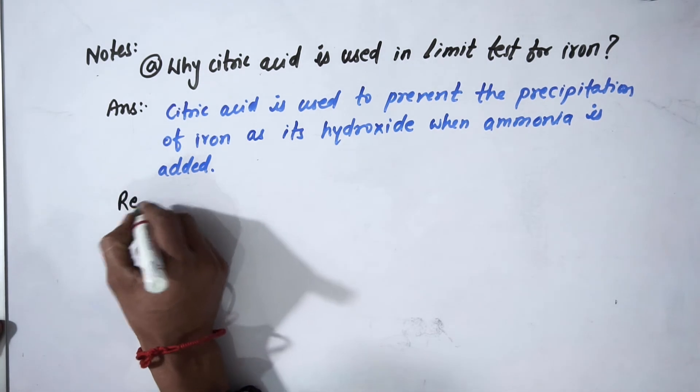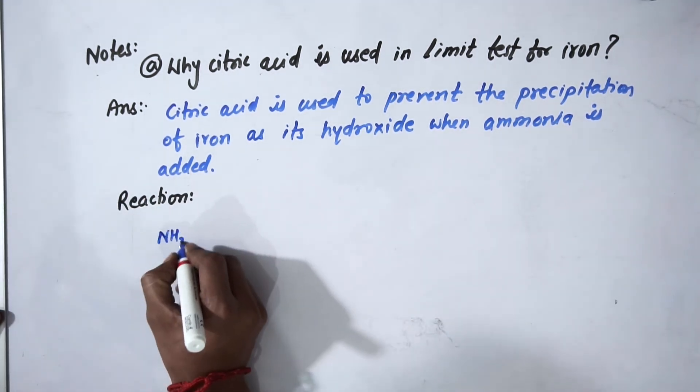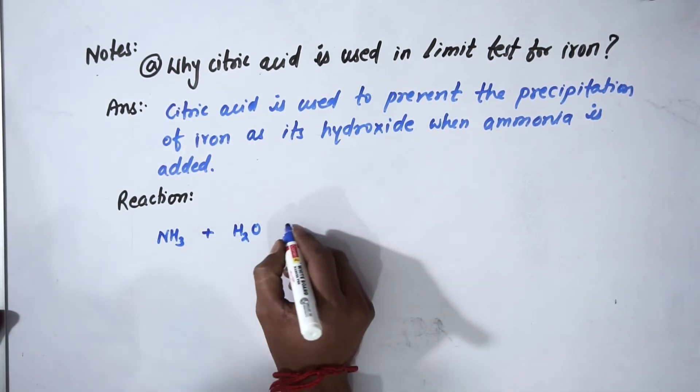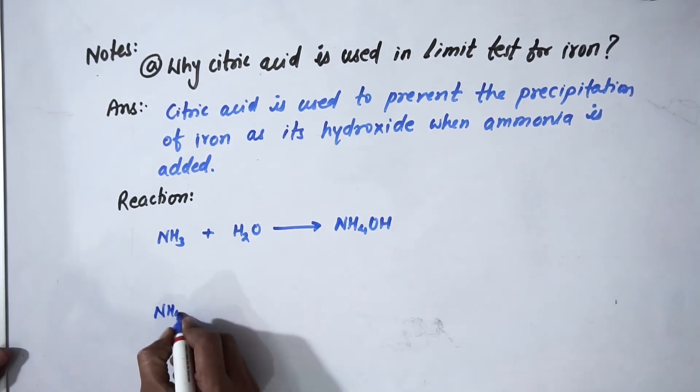Now we'll write the reaction. NH3 reacts with H2O to produce NH4OH (ammonium hydroxide).